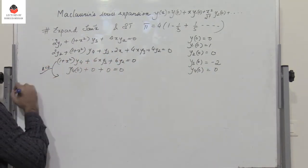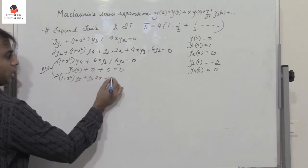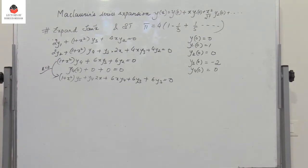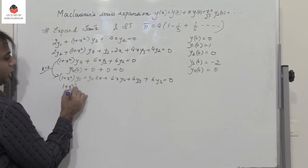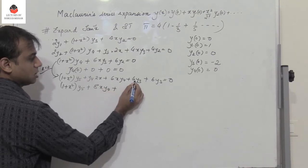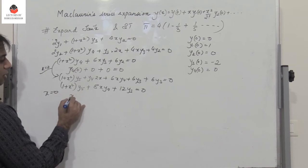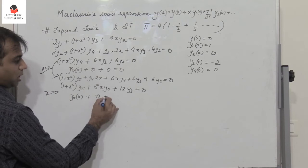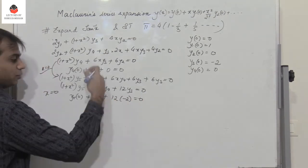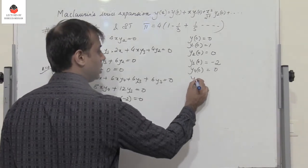To get y₅(0), differentiate again: (1 + x²)·y₅ + 8x·y₄ + 6·y₃ + 6·y₃ = 0, giving (1 + x²)·y₅ + 8x·y₄ + 12·y₃ = 0. Put x = 0: y₅(0) + 12·y₃(0) = 0. Since y₃(0) = −2: y₅(0) = 24.